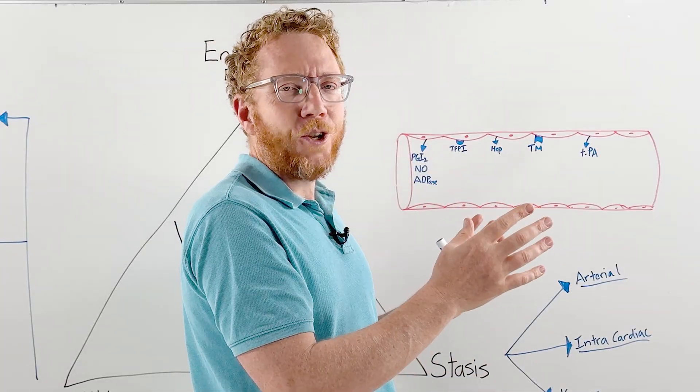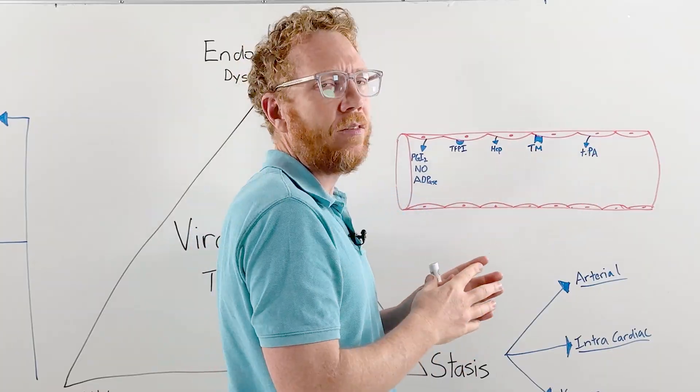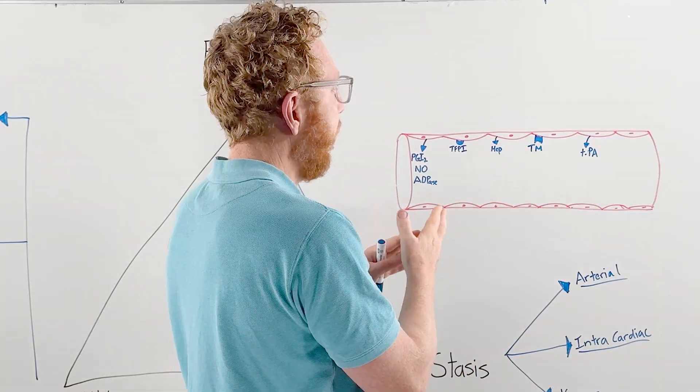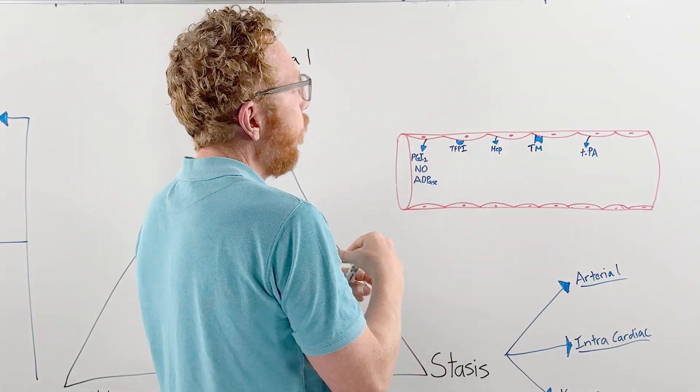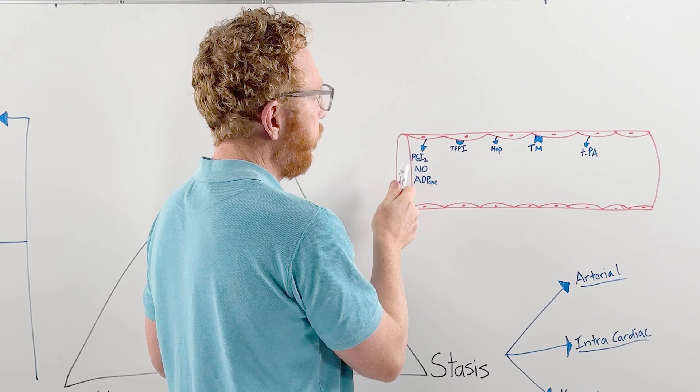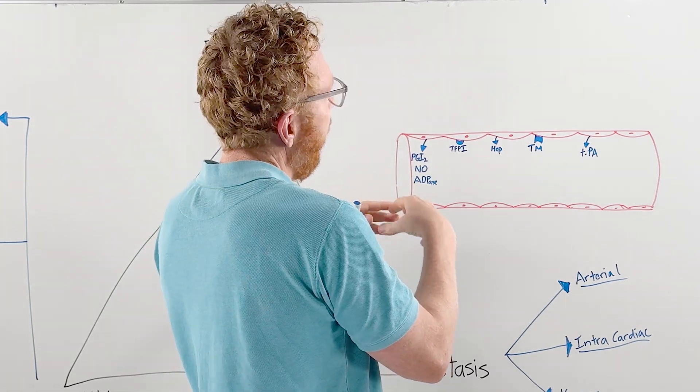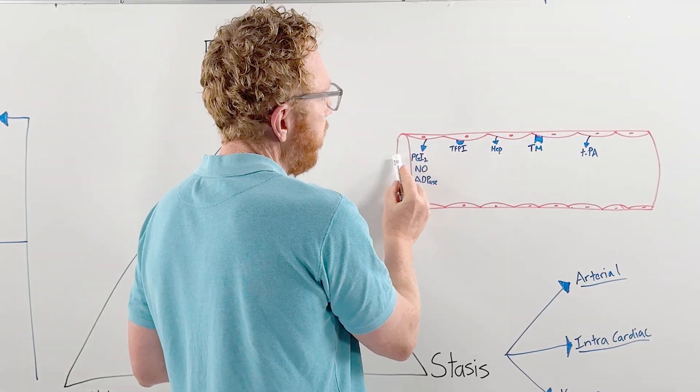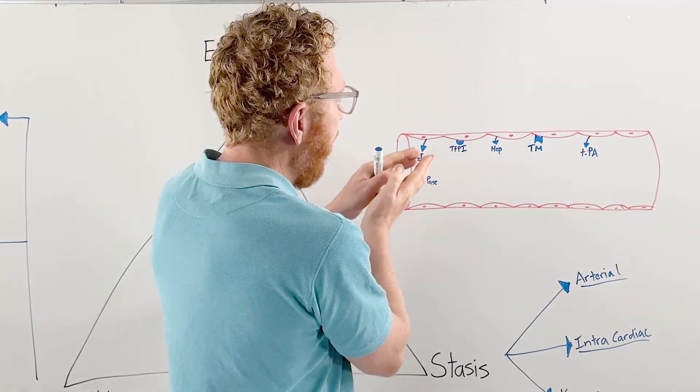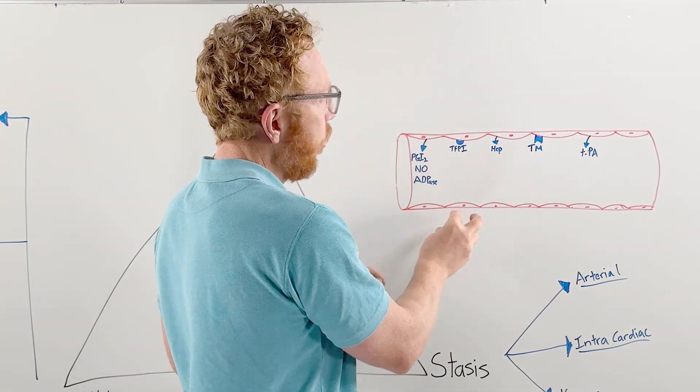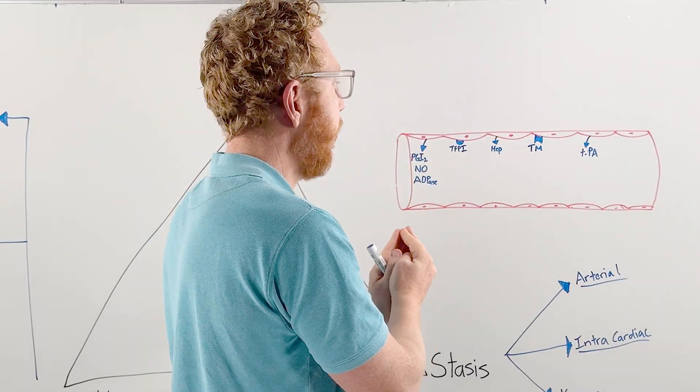That's what normally happens with injury. But most of the time we don't have injury, so the endothelium needs to have a whole host of things in place to prevent clotting all the time. This is its anti-coagulation control. The endothelium produces chemicals to prevent platelet aggregation or platelet plug formation.